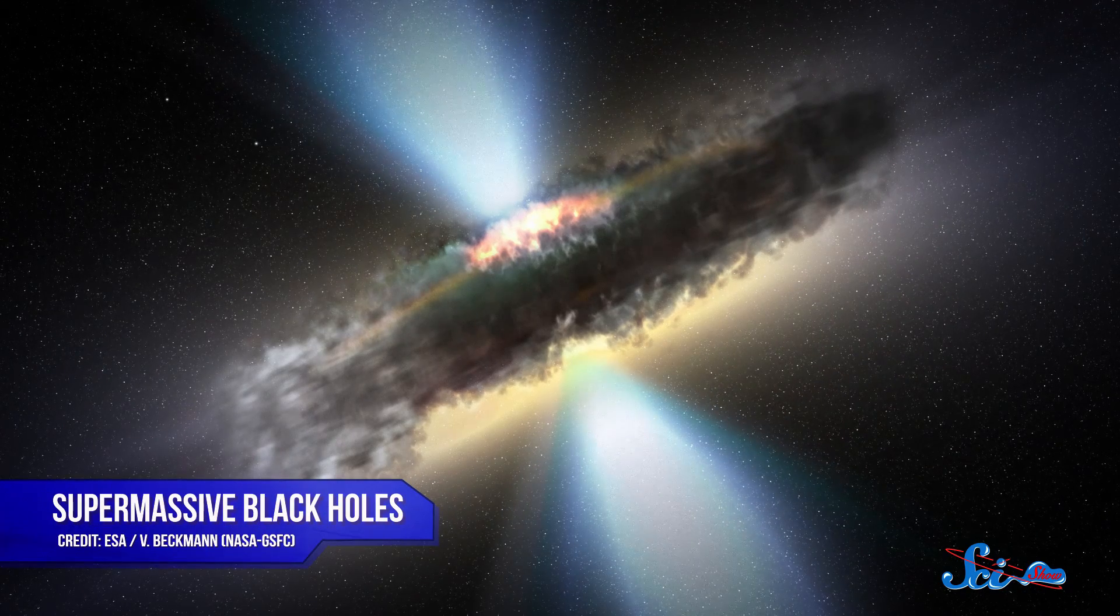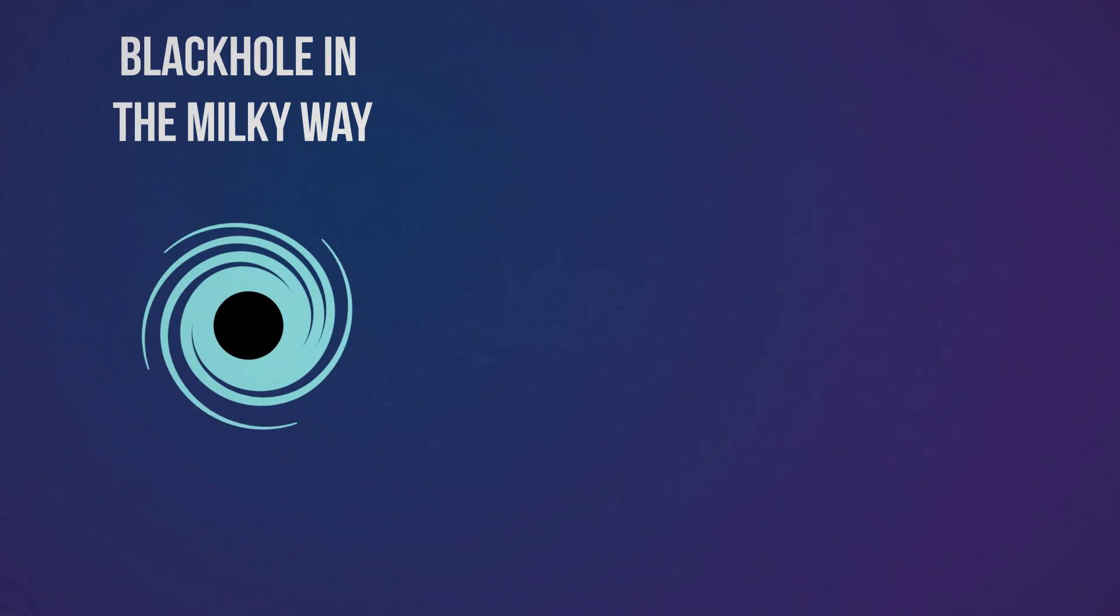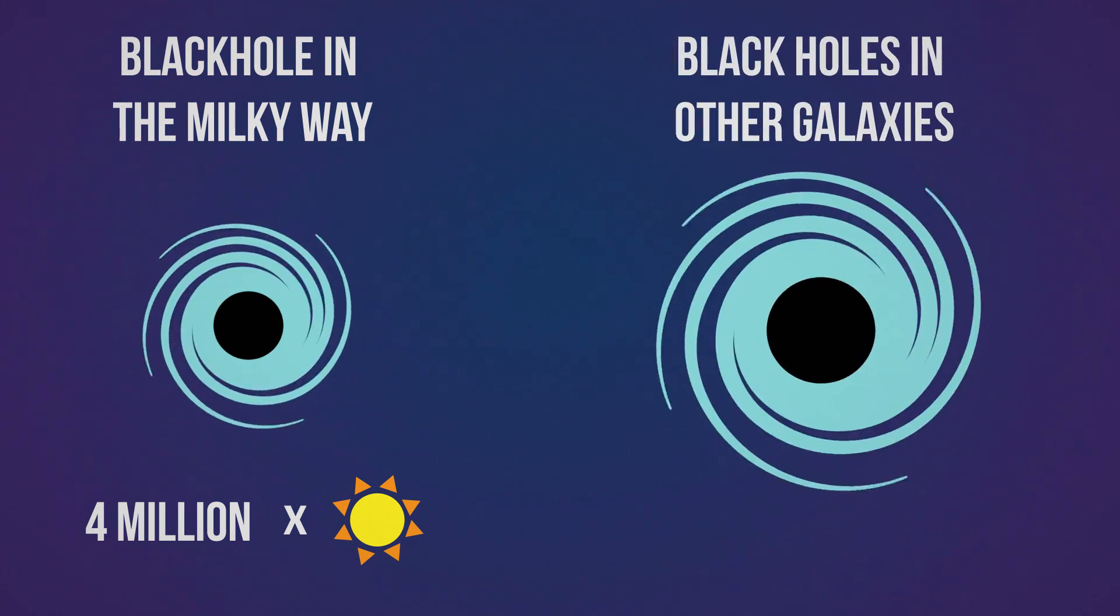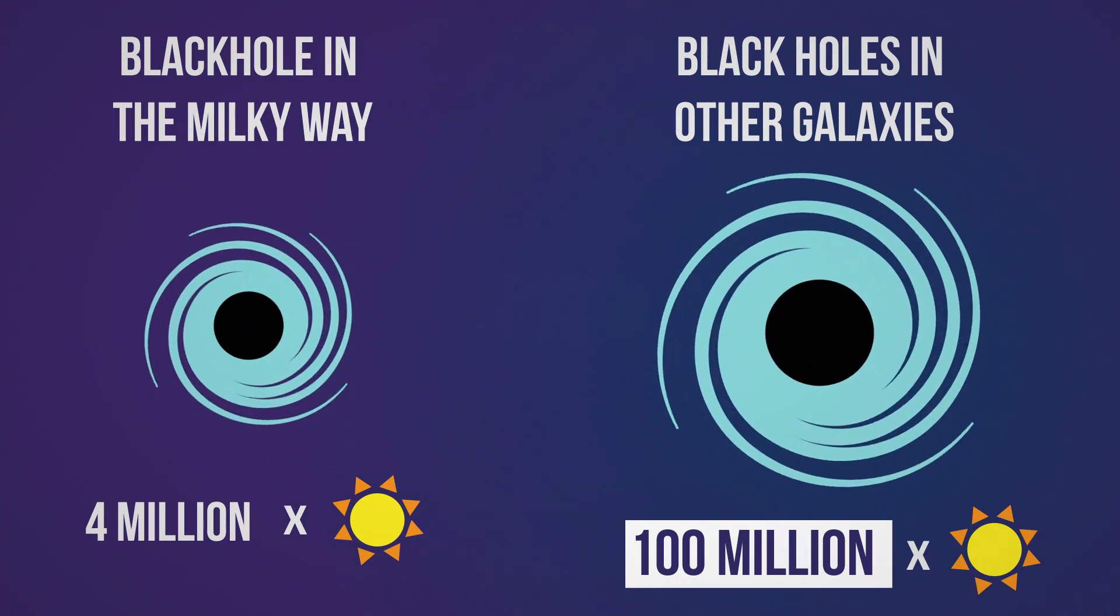Then there are supermassive black holes, which include the one at the center of our galaxy. Astronomers don't know for sure how supermassive black holes form, but ours is actually pretty small, with just four million times the mass of the sun, compared to those at the centers of some other galaxies, which are more than 100 million times the mass of the sun.